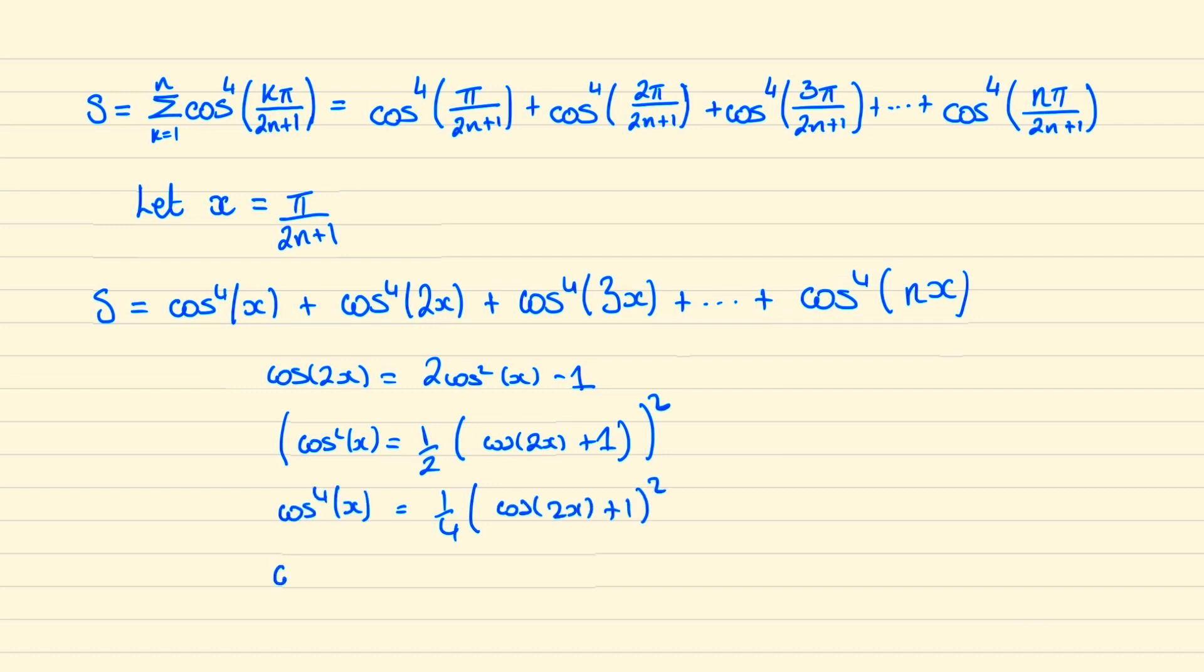And if we consider what happens when this is cos to the 4 of 2x, then this will be the exact same equation as above except it will be cos of 4x. In fact, cos to the 4 of 3x will just become cos 6x and so on. So we can go ahead and replace all of these cos to the 4x with this expression that we've just found.